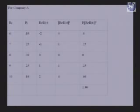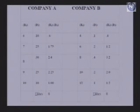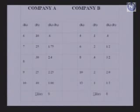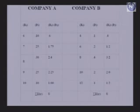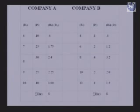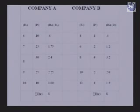For Company B, the expected returns are within a range of 4 to 12 percent, but the final expected return again comes to 8 percent. If you compare Company A and Company B, the range of expected returns for A starts at 6 and ends at 10, whereas for Company B it starts at 4 and ends at 12. The range for Company B has higher dispersion. To find out which company is riskier — whether to invest in Company A or Company B — the tool we use is the standard deviation.